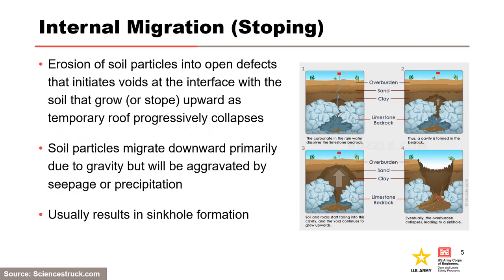Internal migration occurs when soil particles move or drop into an open defect. Soil particles that drop into the bottom of the void are carried away by seepage to an unfiltered exit. If extensive void space exists in coarse soils or bedrock, an open exit may not be needed, but sufficient storage space for eroded fine particles must be available. The process is repeated progressively, causing the void to enlarge and migrate vertically upward.